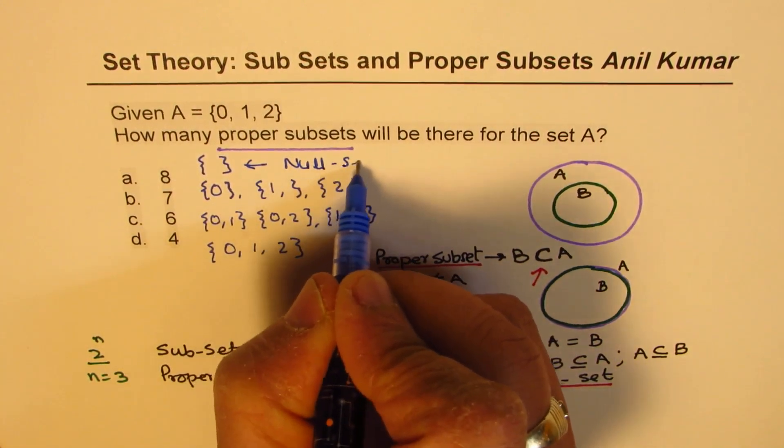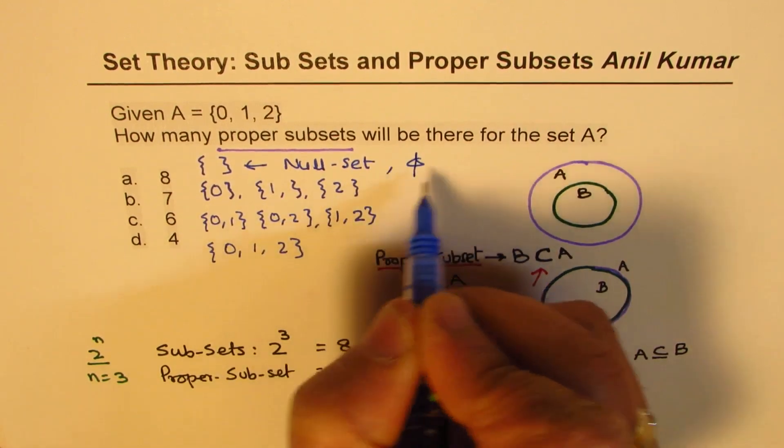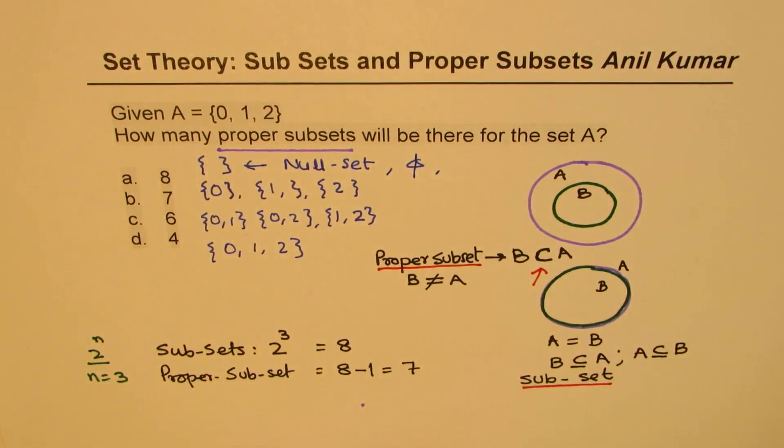Empty set, empty set, which is subset of all. So we also write this as the letter phi. Okay, so now from here.